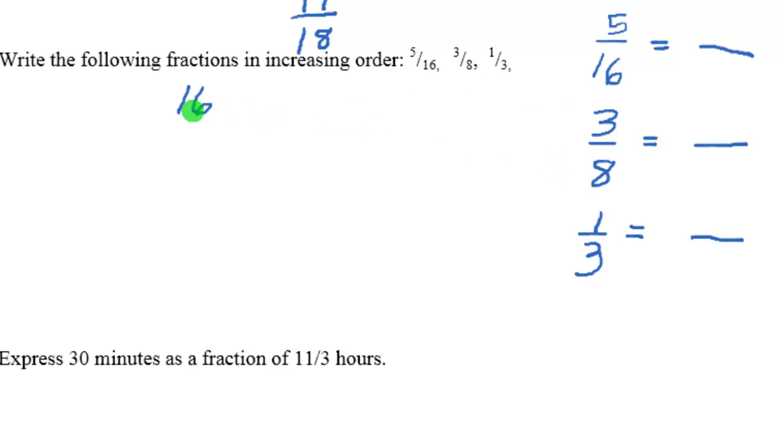8 goes into 16, but 3 doesn't go into 16, so we've got to try a different number. Let's go to the next number. 16 times 2 is 32. 8 goes into 32, 8 times 4, but 3 doesn't go into 32. So we go to the next number, 16 times 3, which is 48. Well, 8 goes into 48, 8 times 6, and 3 goes into 48, 3 times 16. So 48 is our least common denominator.